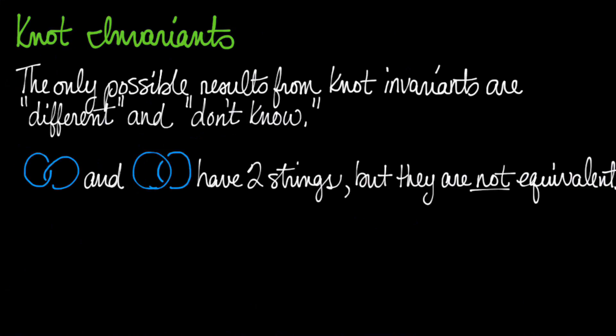Here's a really good example. Here are two different link diagrams. They both have two strings. But in this diagram, you can kind of tell that the hoops are locked together. They're tangled.